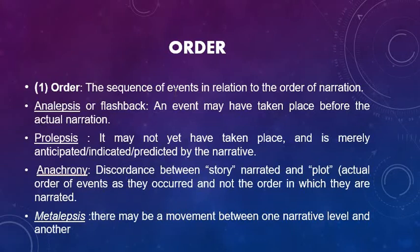The first one is order. What is order according to Gerard Genette? According to him, the sequence of events in relation to the order of narration is called order. It is an ellipsis or flashback when an event may have taken place before the actual narration. It becomes prolepsis if the event may not yet have taken place and is merely anticipated, indicated or predicted. It is anachronic when there is a discordance between story, narrative plot and the order of events as they occur and not the order in which they are narrated. Then comes metalepsis — metalepsis implies there may be a movement between one narrative level and the other.